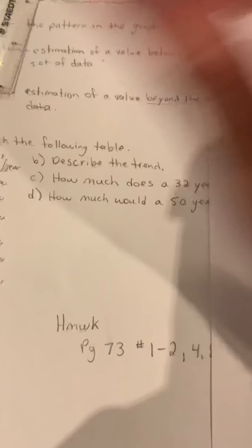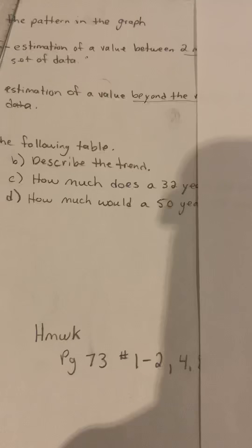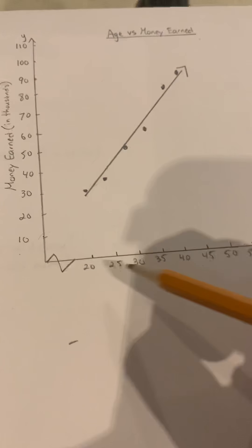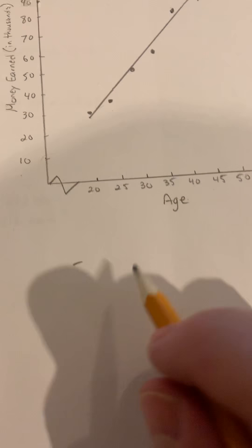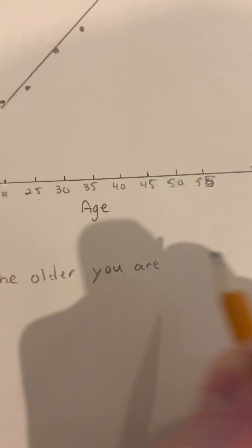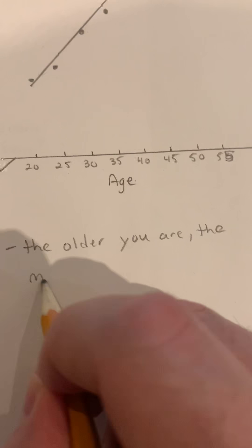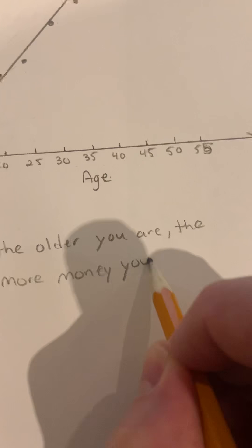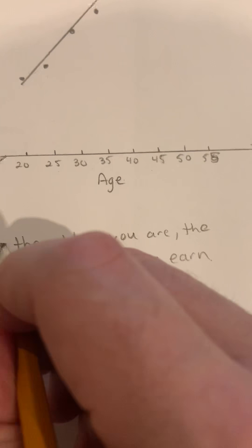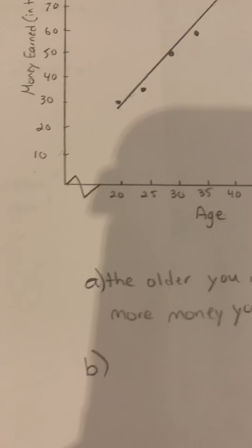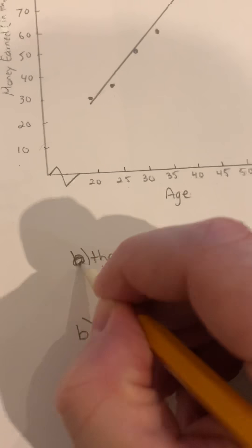The first part says describe the trend. So to describe the trend, we'll notice as we get older the more money we earn. So the trend is: the older you are, the more money you earn.